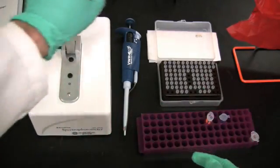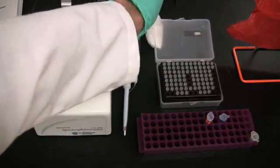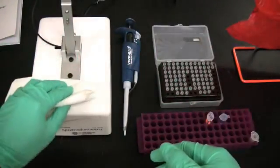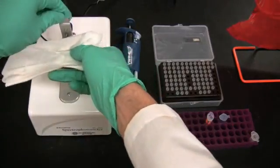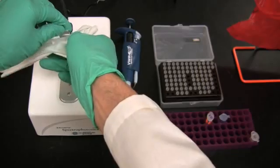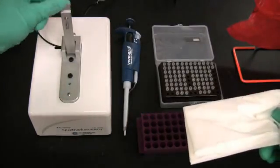Lift the sampling arm and gently wipe both the upper and lower pedestals with a laboratory wipe. Chemical wipes are preferred over conventional paper towels or napkins because they do not leave residue or fibers behind on the measurement surface, which could result in a faulty measurement.